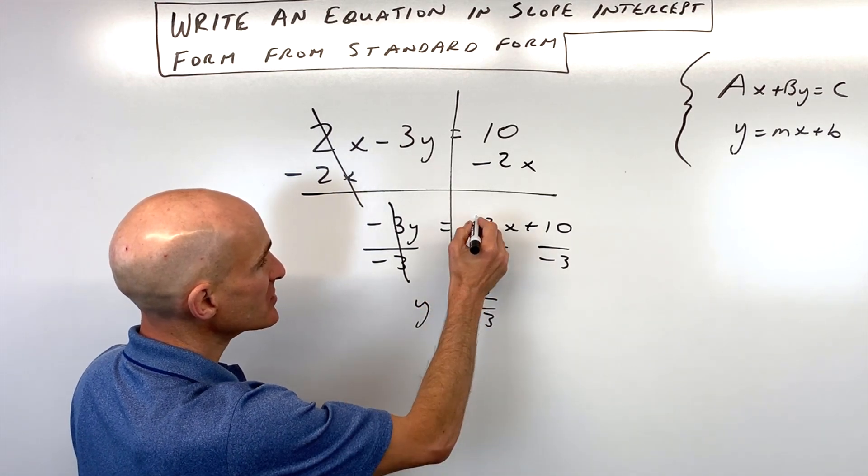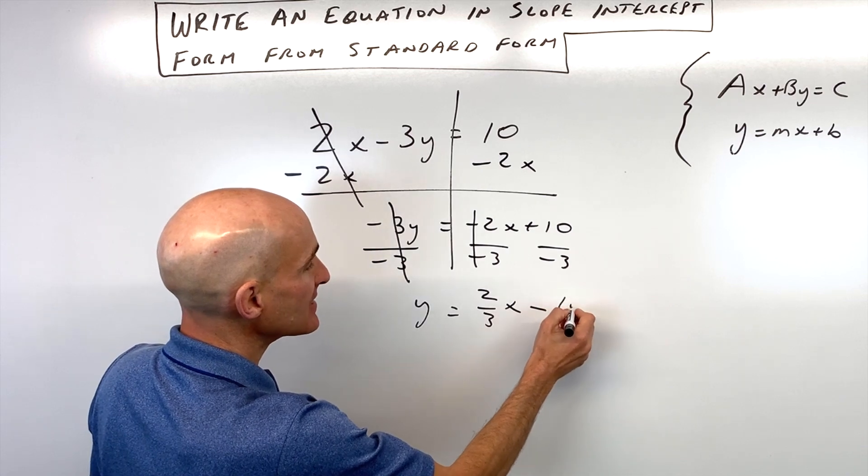We have positive 2 thirds, because these negatives are canceling, x minus 10 thirds.